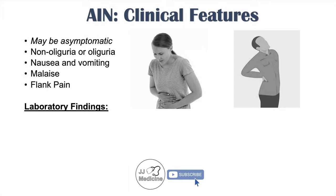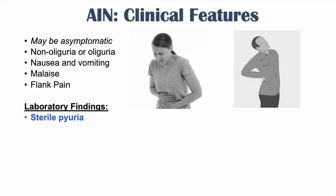Key laboratory findings in AIN include sterile pyuria — white blood cells in the urine with no bacteria present — and white blood cell casts, which are a key finding. There may also be sub-nephrotic range proteinuria, meaning only a small amount of urinary protein, and microscopic hematuria.